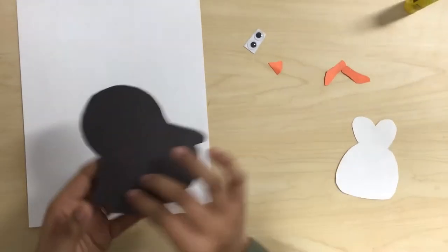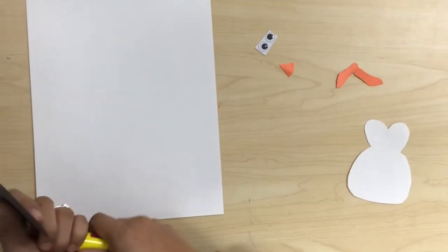First, we're going to glue the black body penguin cut out onto the white construction paper.